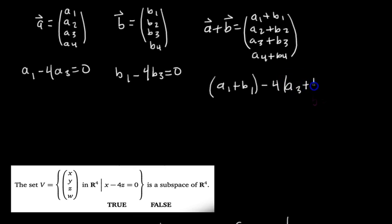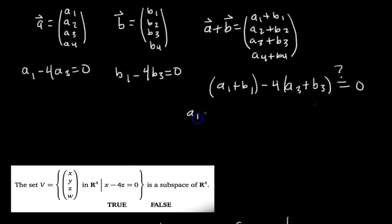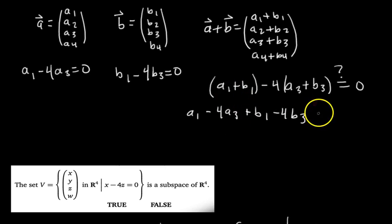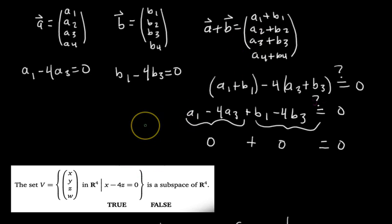We rearrange: (A1 minus 4A3) plus (B1 minus 4B3). We distributed the 4 and rearranged the terms. We need this to equal zero. We know A1 minus 4A3 equals zero, since A is in the set, and B1 minus 4B3 equals zero since B is in the set. So zero plus zero equals zero — yes! The sum A plus B is also in the set, meaning the set is closed under addition.